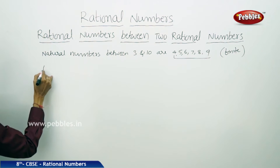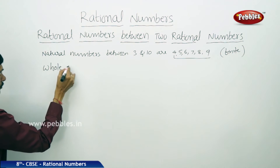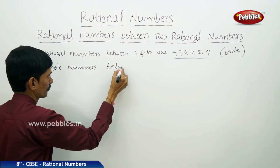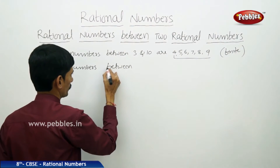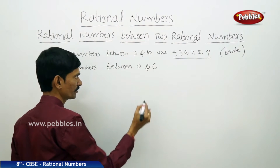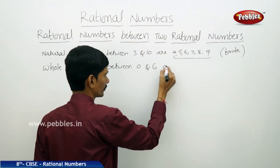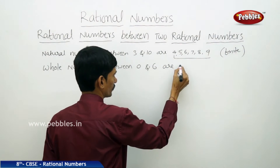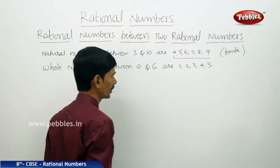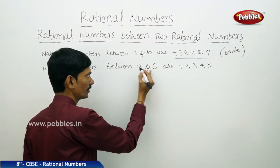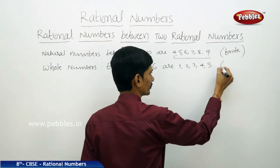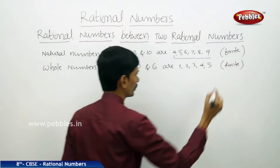Now, how many whole numbers are between 0 and 6? They are 1, 2, 3, 4, 5 — so there are 5 whole numbers between 0 and 6. These are also finite whole numbers.